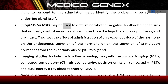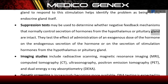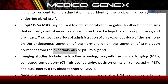Suppression tests may be used to determine whether negative feedback mechanisms that normally control secretion of hormones from the hypothalamus or pituitary gland are intact. They test the effect of an exogenous dose of the hormone on its endogenous secretion or on the secretion of stimulating hormones from the hypothalamus or pituitary gland.